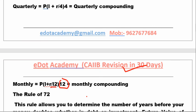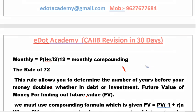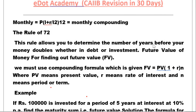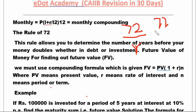The Rule of 72 states: to find how many years for your money to double, divide 72 by the rate of interest. For example, at a 9% rate of interest, 72 ÷ 9 = 8 years — meaning your money will double in 8 years.